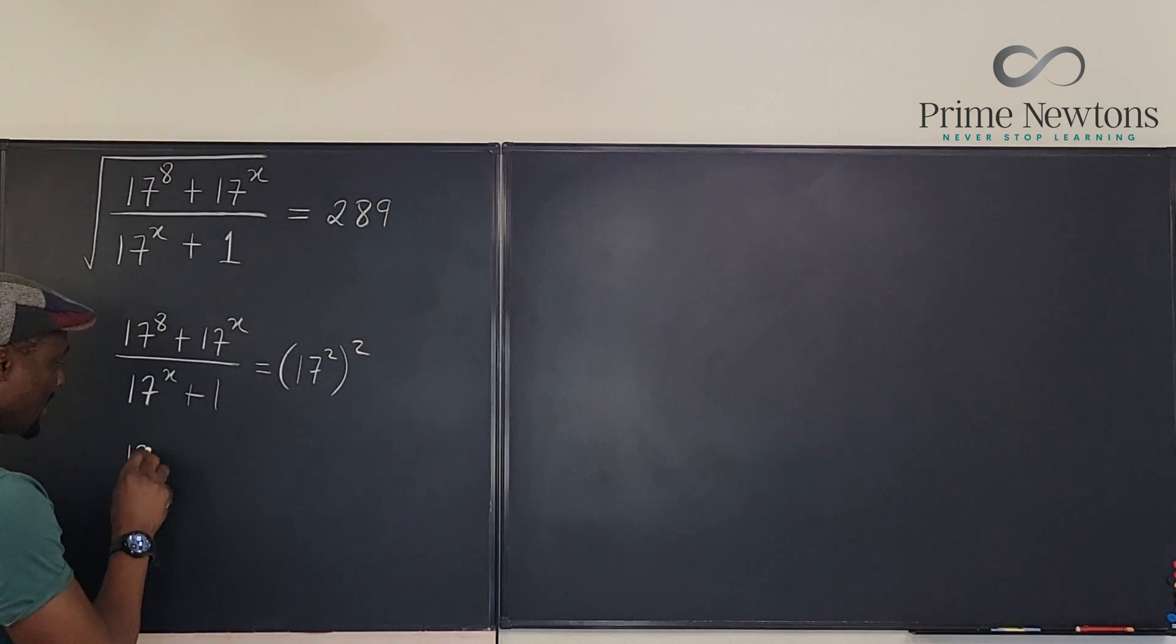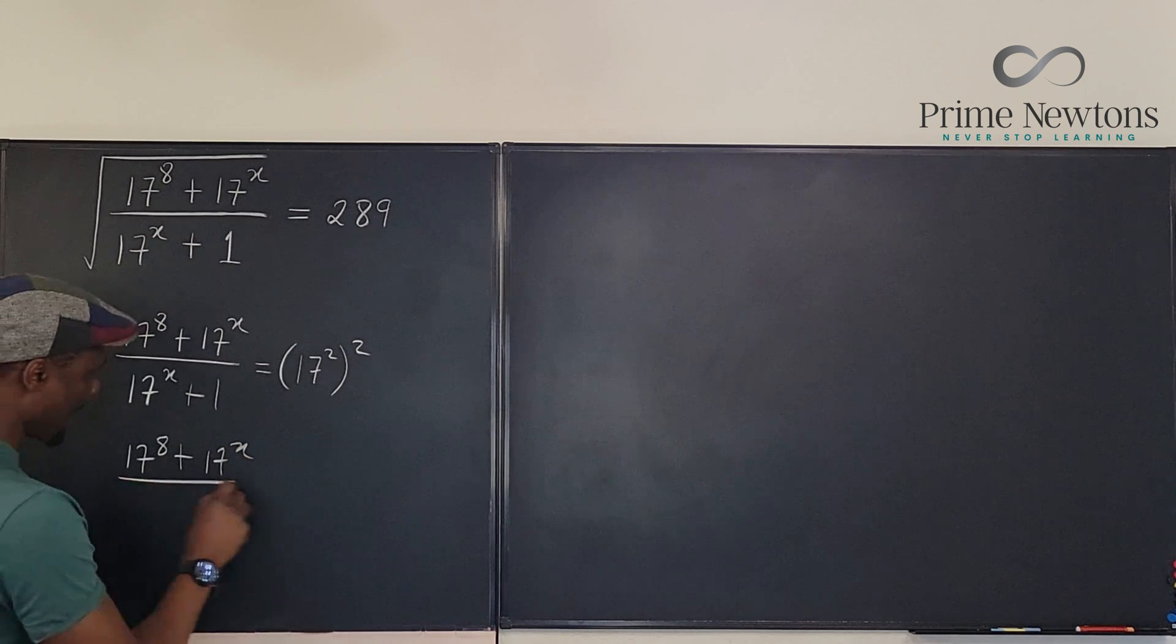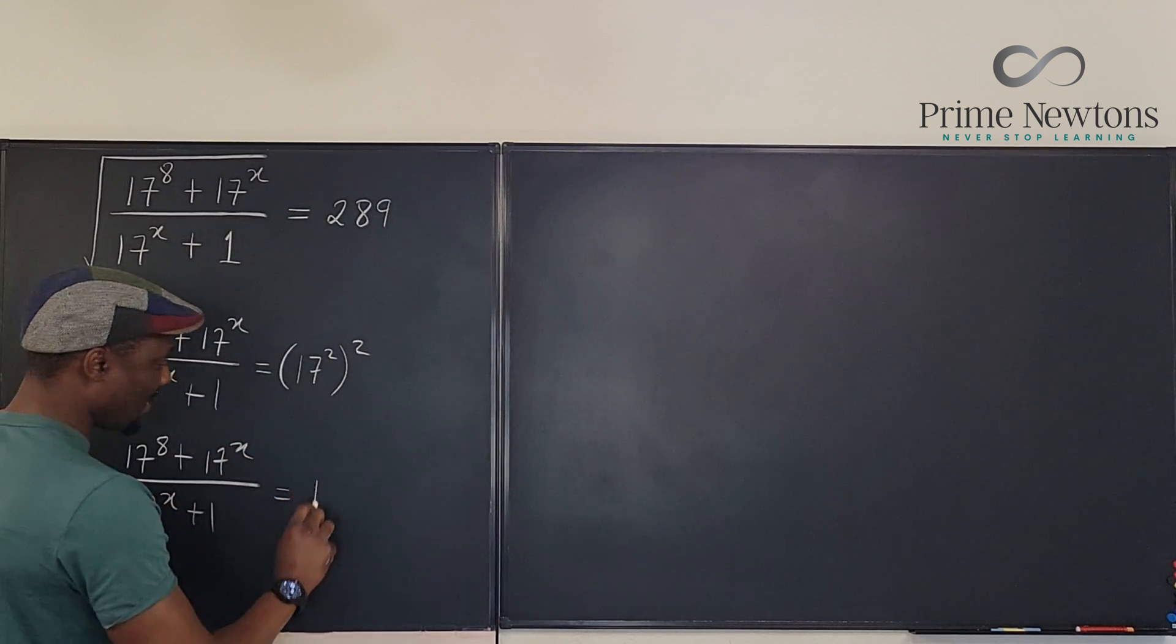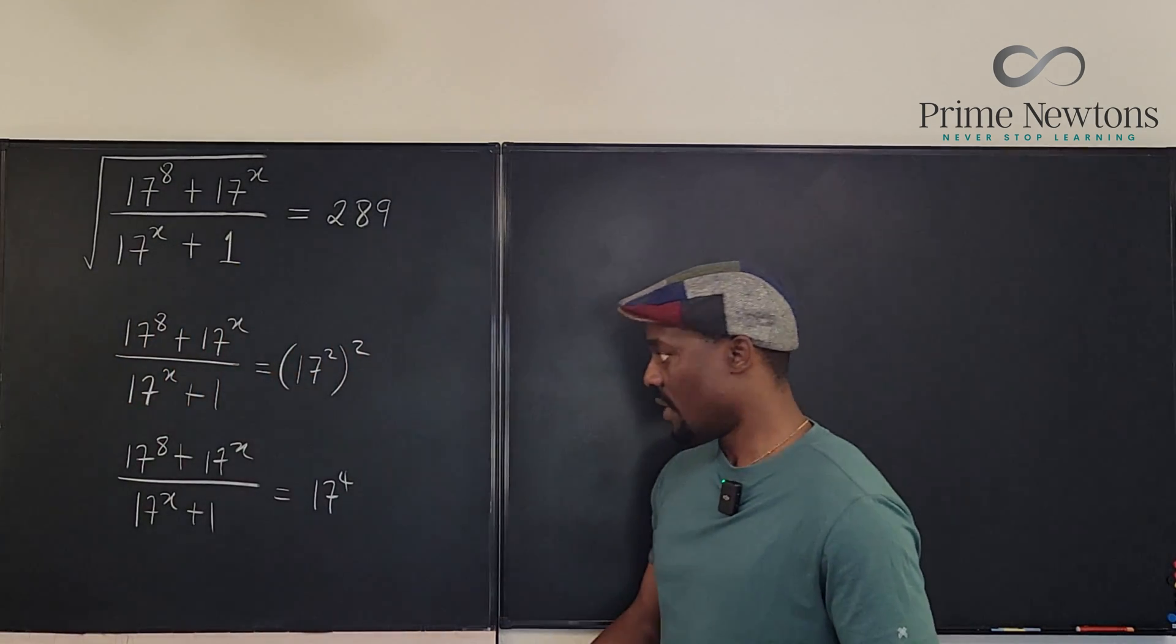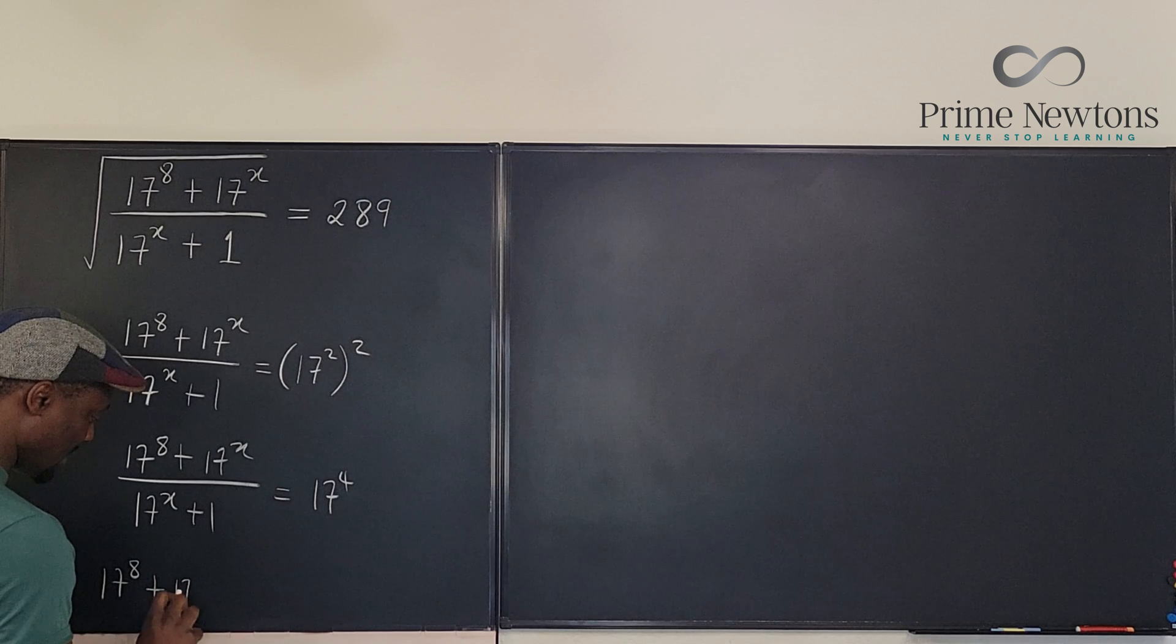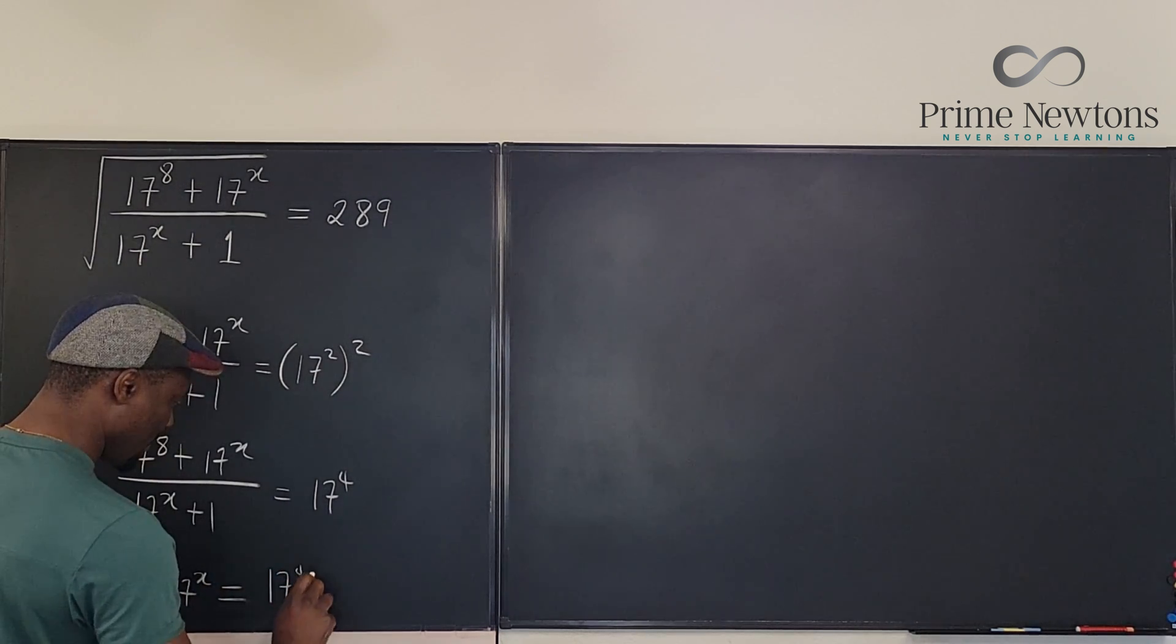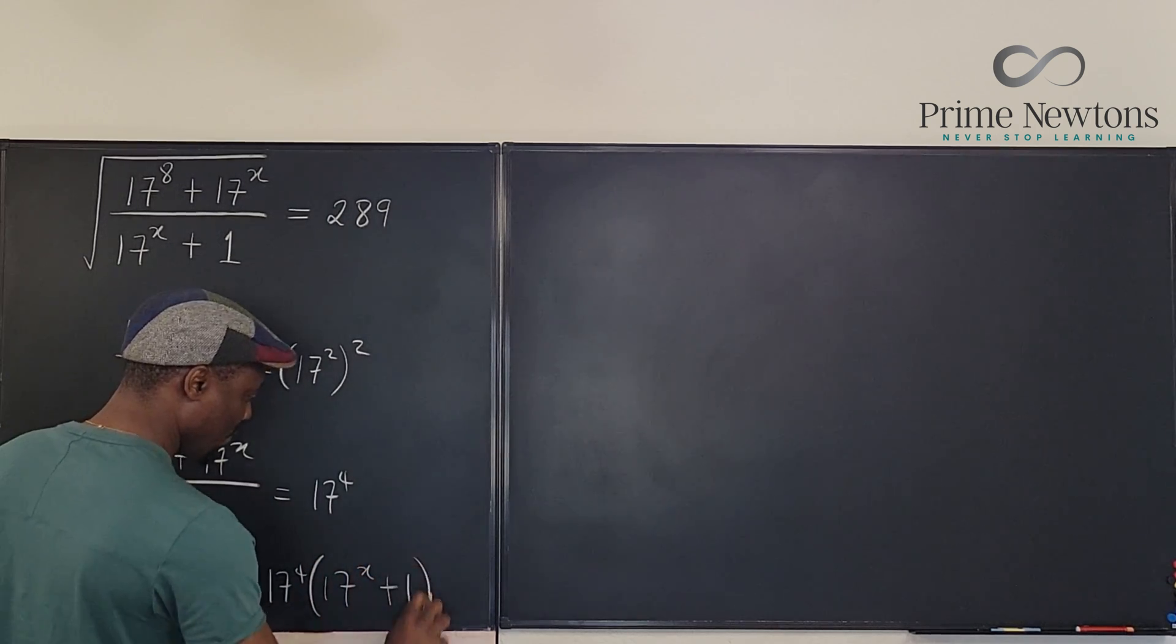So here I have 17 to the 8th plus 17 to the X over 17 to the X plus 1 is 17 to the 4th. Well, the obvious thing is to cross multiply. So I'm going to have 17 to the 8th plus 17 to the X will be equal to 17 to the 4th multiplied by 17 to the X plus 1.